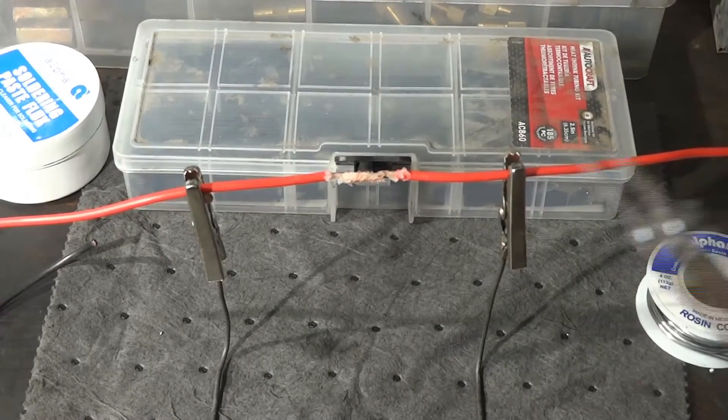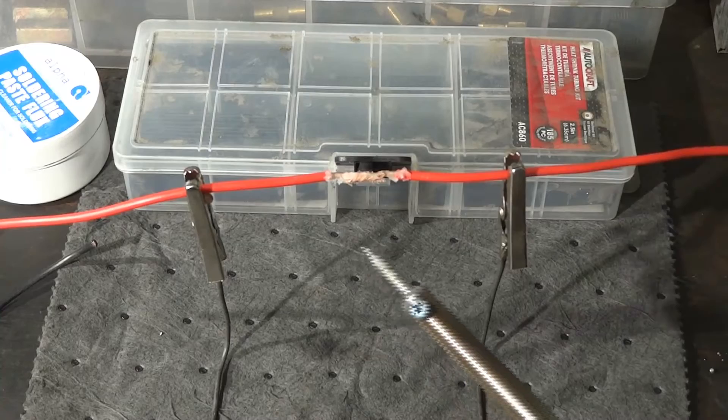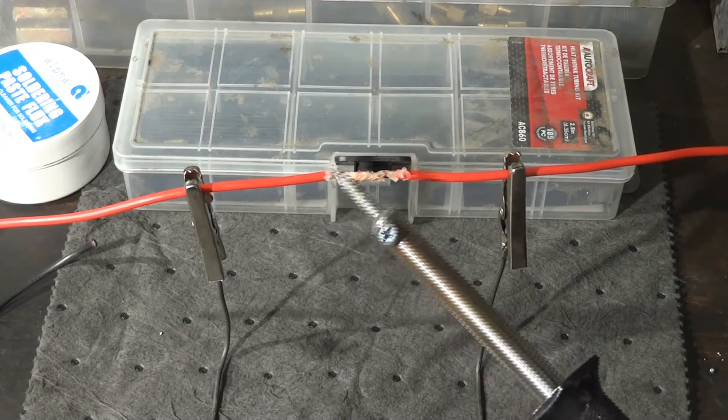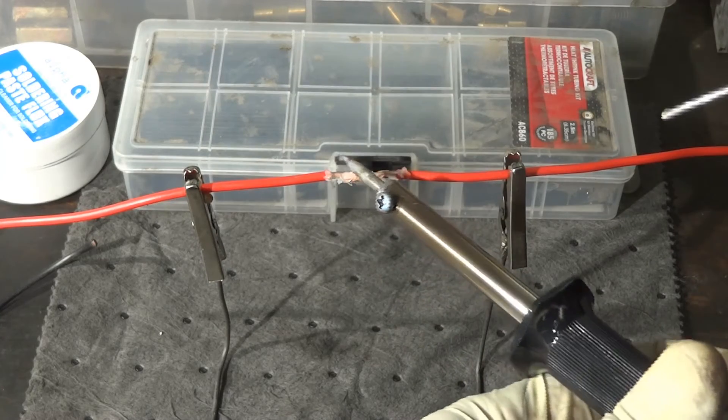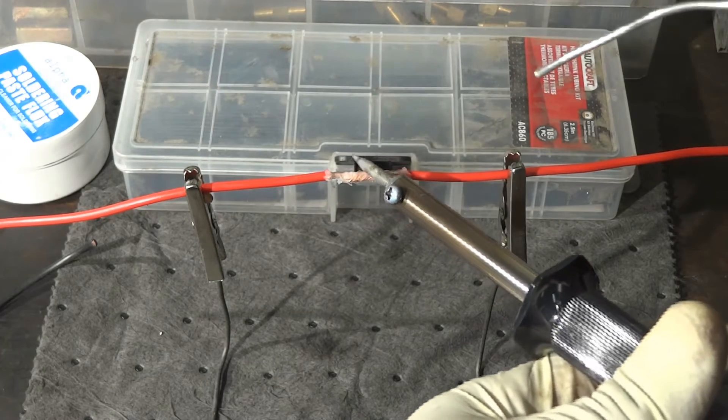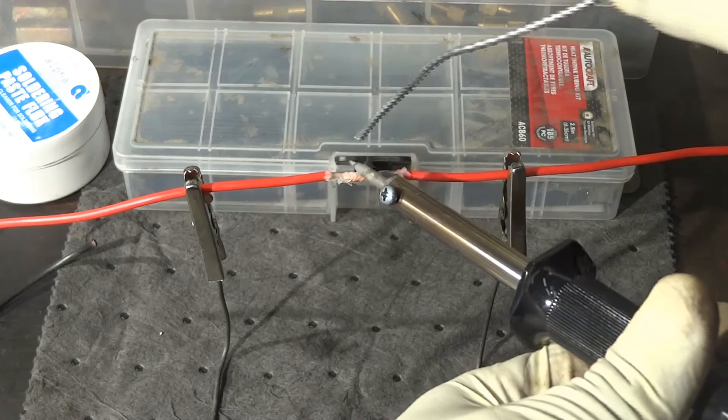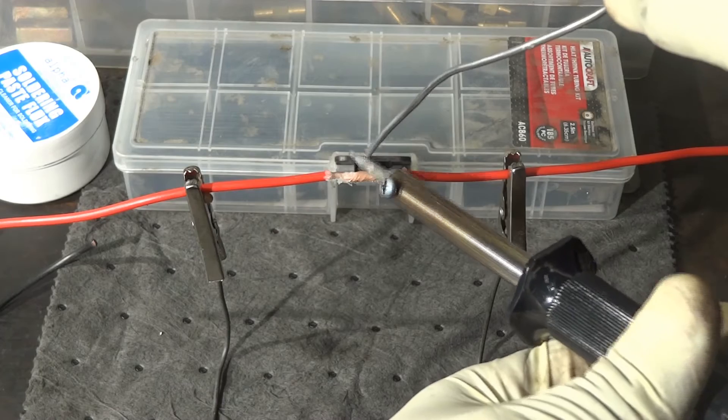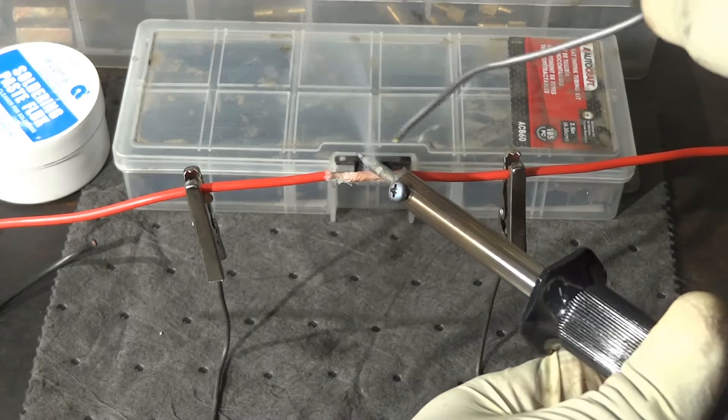And now we're going to bring our soldering iron in the picture. Sometimes I see people trying to solder a wire like this. So they will put a soldering iron on top of the wire and then they will try to solder it like this. So don't do that. That's the wrong way of doing it.